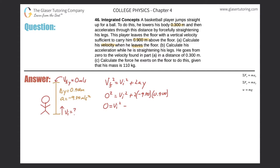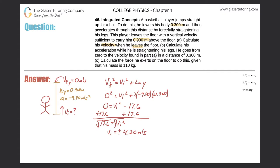So we get: 0 = vi² − 17.6. Adding 17.6 to both sides gives us 17.6 = vi². Taking the square root of both sides, we get ±4.20 meters per second. We accept the positive answer because the player is moving upward — positive y-direction. So the initial velocity leaving the floor is 4.20 m/s. That completes Part A.